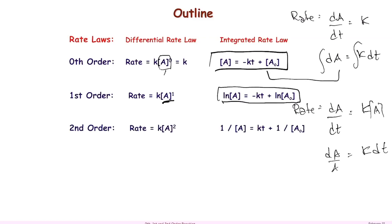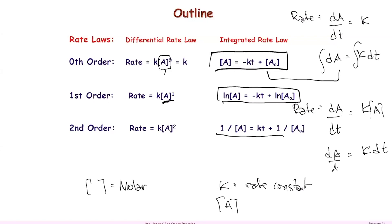Second order means the chemical is raised to the second power, and the integrated rate law is 1/A = kt + 1/A0. K is the rate constant. The chemical in brackets represents the concentration of that species — propane, ammonia, oxygen — and the brackets indicate molarity in aqueous solution, units of moles per liter.